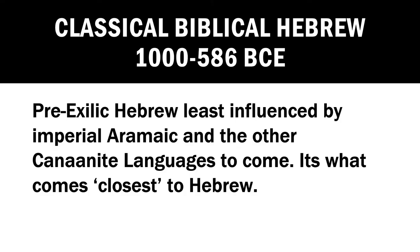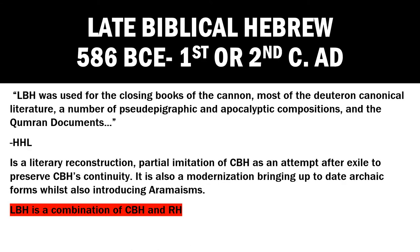Classical Biblical Hebrew is pre-exilic Hebrew, least influenced by Imperial Aramaic and the other Canaanite languages — it's what comes closest to Hebrew. Late Biblical Hebrew is a bit more intricate: LBH was used for the closing books of the canon, most of the deuterocanonical literature, pseudepigraphic and apocalyptic compositions, and the Qumran documents. LBH is a literary reconstruction — a partial imitation of CBH as an attempt after exile to preserve CBH's continuity — as well as a modernization bringing up-to-date archaic forms while introducing Aramaisms. All in all, LBH is a combination of Classical Biblical Hebrew and Rabbinical Hebrew.